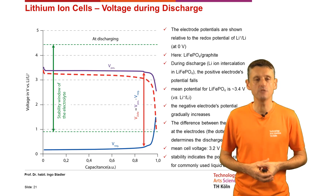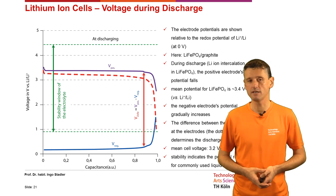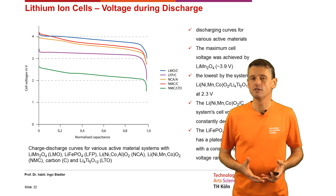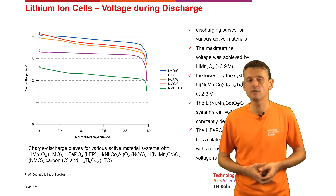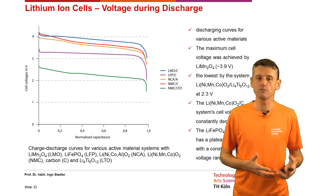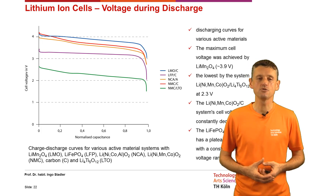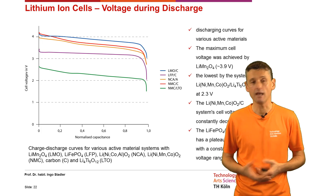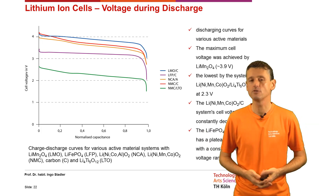The green dotted lines indicate the stability range — the potential range for commonly used liquid electrolytes. In this diagram, we see discharge curves of several active materials from many different lithium ion cells. The maximum cell voltage is achieved by the one using lithium with manganese, at around 3.9 volts. The lowest is achieved by the lithium nickel manganese cobalt versus lithium titanate system at 2.3 volts. The lithium nickel manganese cobalt system cell voltage constantly decreases, while in contrast, the lithium iron phosphate system has a plateau-like curve with a constant cell voltage range.